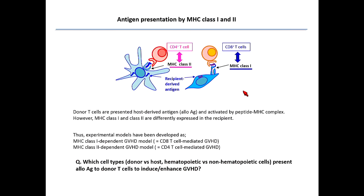Donor T-cells are presented host-derived alloantigens and activated by the peptide-MHC complex. However, MHC class 1 and class 2 are differently expressed in the recipient. As you know, MHC class 1 is expressed on most nucleated cells; however, MHC class 2 is quite limited, like hematopoietic professional APCs. Experimental models have been developed as MHC class 1-dependent CD8 T-cell-mediated GvHD or MHC class 2-dependent CD4 T-cell-mediated GvHD.